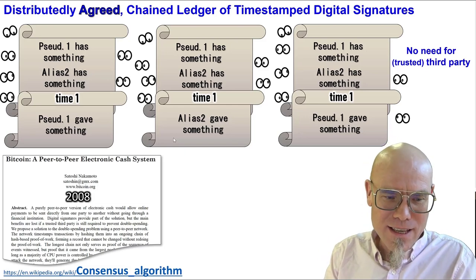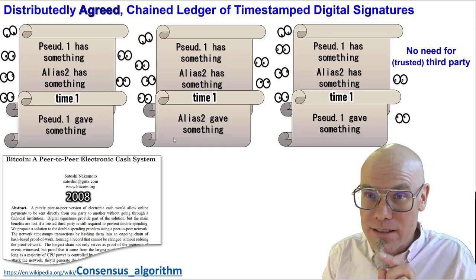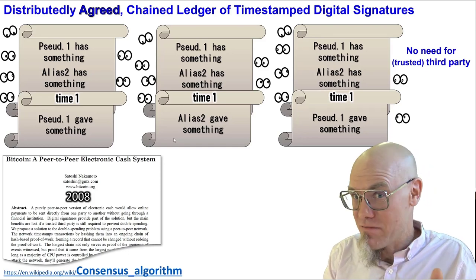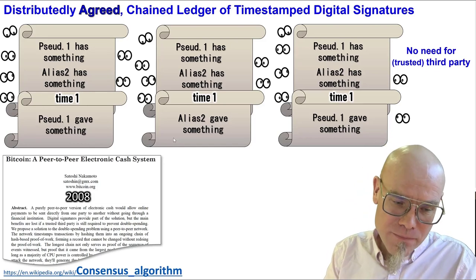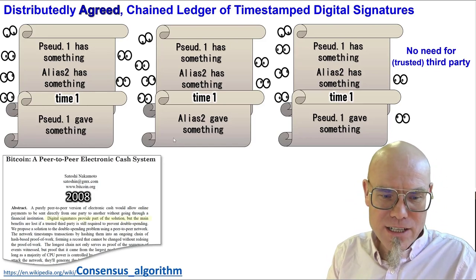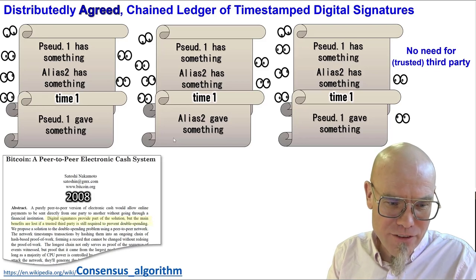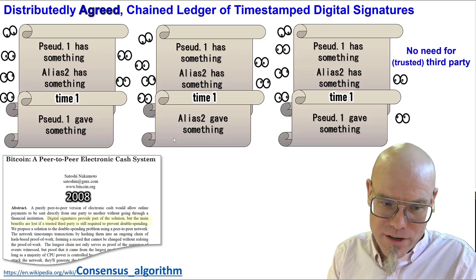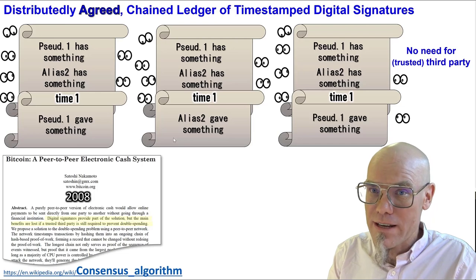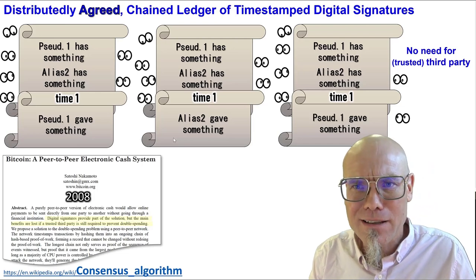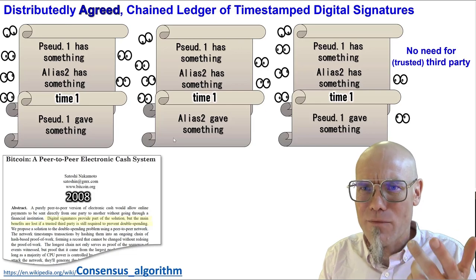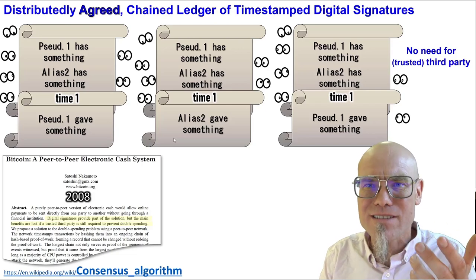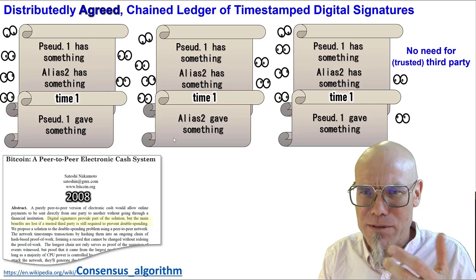What did Nakamoto say? We don't know who they are. How did Nakamoto solve the consensus algorithm problem? Well, they started with saying: digital signatures provide part of the solution, but the main benefits are lost if a trusted third party is still required to prevent double spending. Double spending is this idea that you have money in your wallet, but you've already spent it — like a bounced check. That's the idea of double spending.